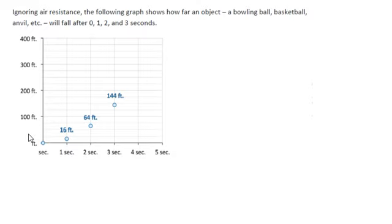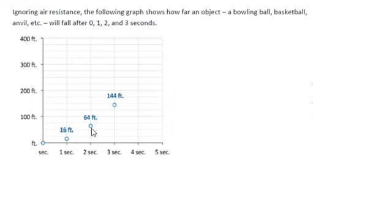We're asked to create multiple representations and look for patterns. The first pattern I notice is that if I take the time in seconds, multiply it by 4, and then square that number, I get these distance values. So the square root of 144 is 12, and 12 divided by 4 is 3. The square root of 64 is 8, divided by 4 gives 2. The square root of 16 is 4, divided by 4 gives 1. So I can take the input or time, multiply it by 4, square that number, and get the output distances.